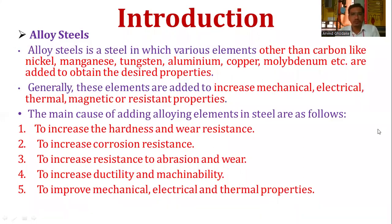Today we will discuss about alloy steels. Alloy steel is a steel in which various alloying elements other than carbon, like nickel, manganese, tungsten, aluminum, copper, and molybdenum, etc., are added to obtain the desired properties.